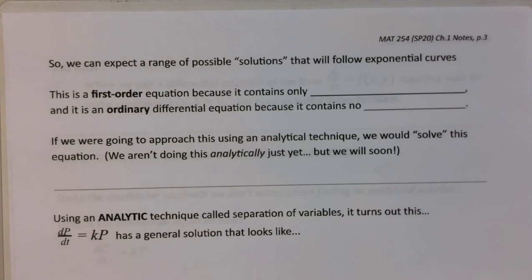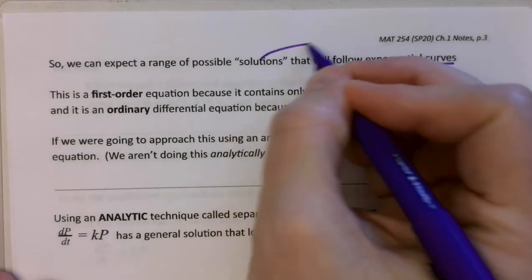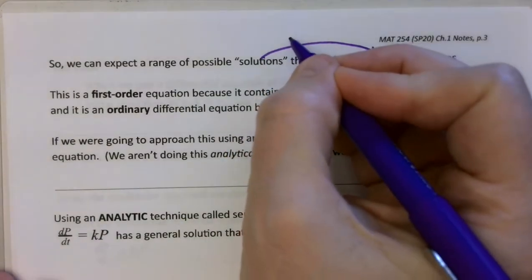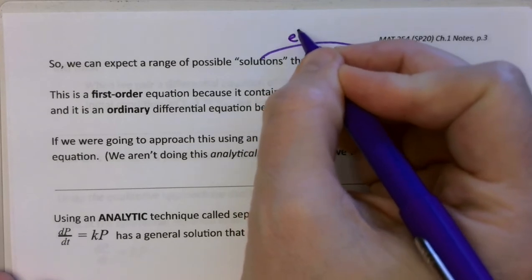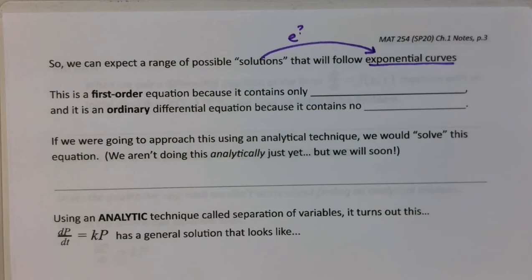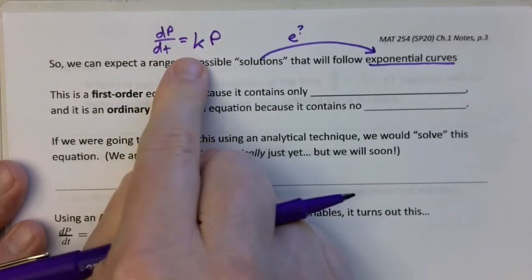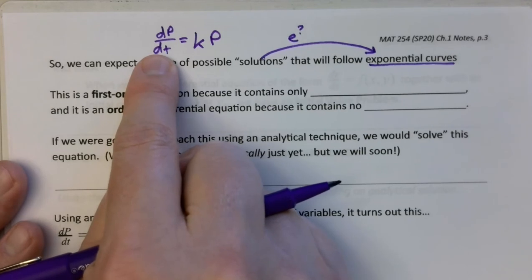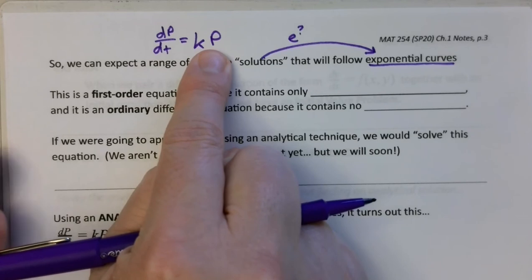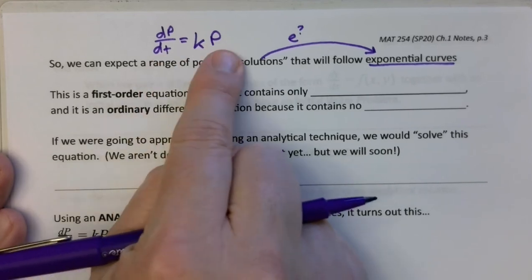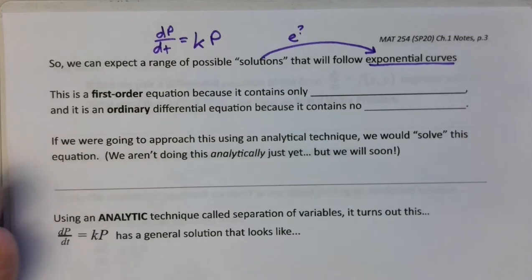So that gets us to the end of this page and allows us to begin the next page. We can expect a range of possible solutions that are all going to follow exponential curves. And the exponential curves are coming from the solutions looking like exponential curves, something like e to the power something. And we know that because we're talking about the equation from the previous page of dP/dt is equal to some constant times P. It's literally saying the rate of change of a function is equal to some constant times that function. And as we discussed in class last time, there's only two ways for you to get a function that is basically equal to its derivative. And that's if you're talking about an exponential or if you're just talking about the boring old y equals zero or P equals zero in this case.